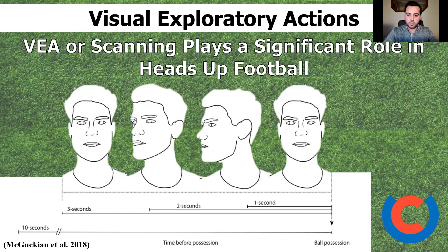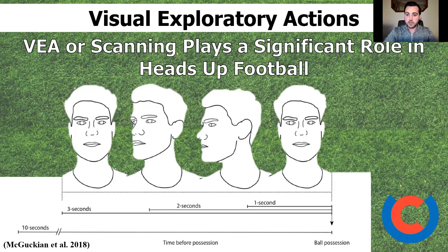McGuckian identified that we can break visual exploratory actions into two components: head turn frequencies and head turn excursions. Head turn frequencies refers to the number of times you rotate your head from left to right. Head turn excursions refers to the extent to which you're rotating your head — a small excursion would be just a slight turn, whereas a large excursion would be a much more vivid head turn, similar to what we would have seen Lampard doing in that previous video.